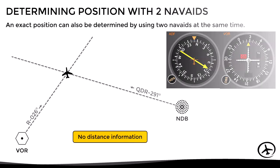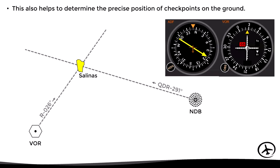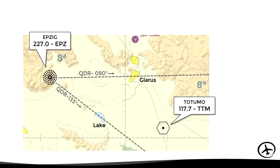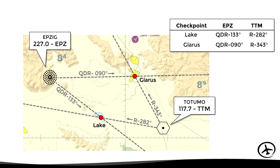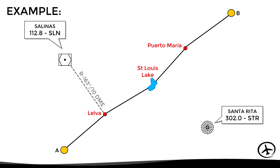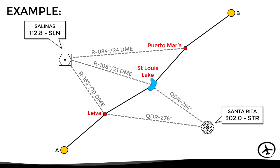Just like in the previous cases, we can use this technique to determine the position of a visual checkpoint on the ground. Here we have a VOR and an NDB, and between them there are a couple of visual checkpoints, which are a lake and a town called Glarus. We could determine the approximate QDRs from the NDB and the approximate radials from the VOR in order to create fixes that identify the checkpoints. So if we are planning a VFR route, we could use more than one nearby NAVAID, combining radial and distance techniques.